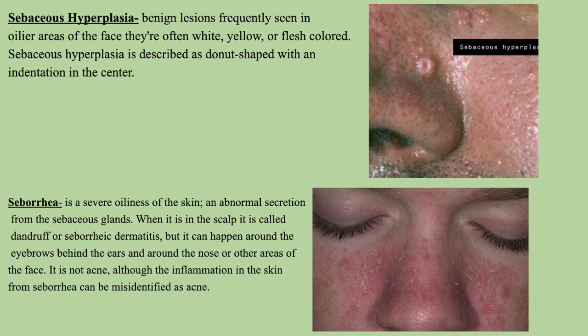Sebaceous hyperplasia is a benign lesion frequently seen in oilier areas of the face. They are often white, yellow, or flesh-colored and are described as donut-shaped with an indentation in the center. Seborrhea is a severe oiliness of the skin — an abnormal secretion from the sebaceous glands.